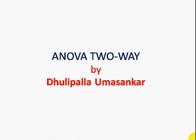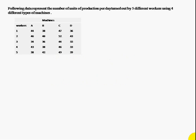Today we are going to discuss another two-way problem. The problem involves machines A, B, C, D and workers one, two, three, four, five. We have to determine whether the machines have equal capacity and whether the workers have equal capacity. For that, we will first code the data.